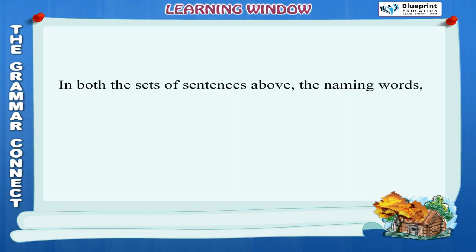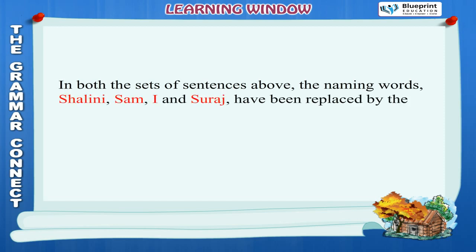In both sets of sentences, the naming words Shalini, Sam, I and Suraj have been replaced by the words She and We. Sometimes a different word is used in place of a naming word.